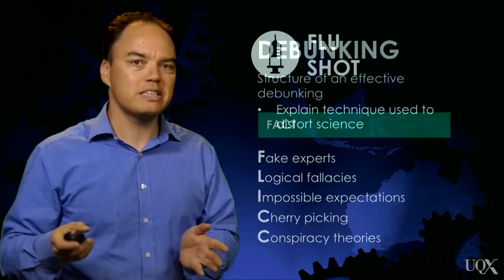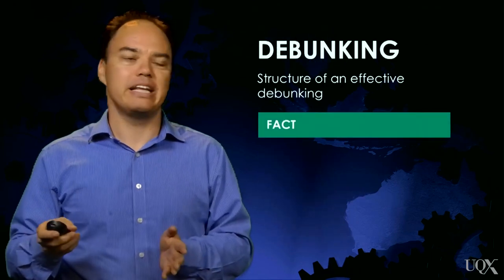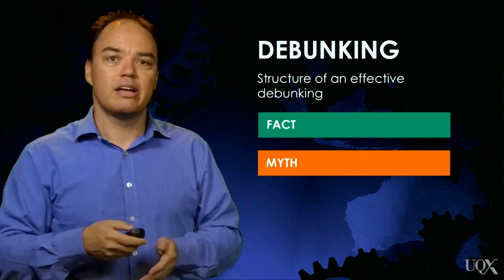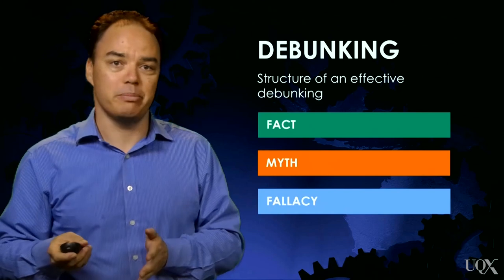Putting all this together, an effective debunking needs three elements: the facts, the myth, and the fallacy used by the myth. If you want examples of this type of debunking, go no further than this MOOC. All our lectures that debunk myths from weeks one to five adopt the fact-myth-fallacy format. The approach of our MOOC was based on the psychological and educational research described in week six.